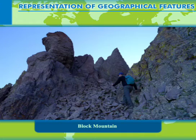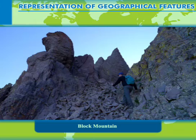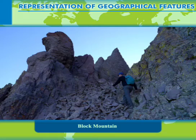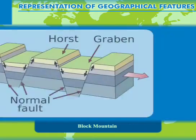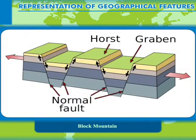Fault block mountains or block mountains are created when faults or cracks in the earth's crust force materials or blocks of rocks upwards or downwards. The uplifted blocks are called block mountains or horsts. The intervening dropped blocks are called grabens, which can be small or form rift valley systems.